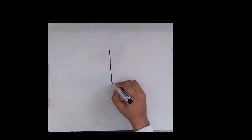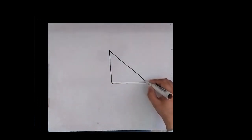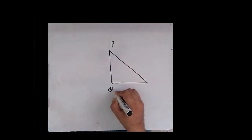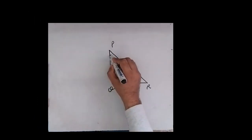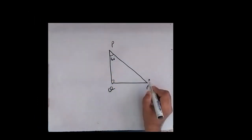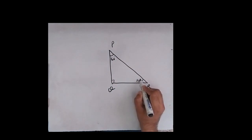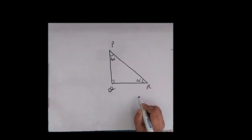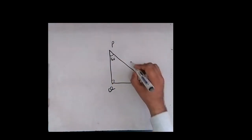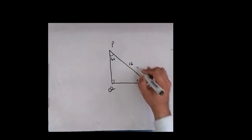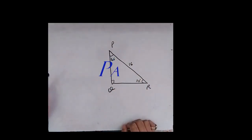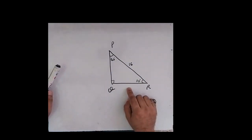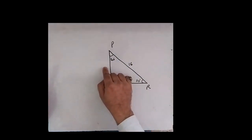I will draw one more right angle triangle — triangle PQR. Angle P is 60 degrees, angle R is 30 degrees, and the hypotenuse PR is 16. Now pause this video and try to think: what will be the length of QR and what will be the length of PQ?